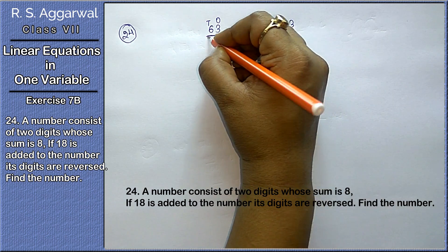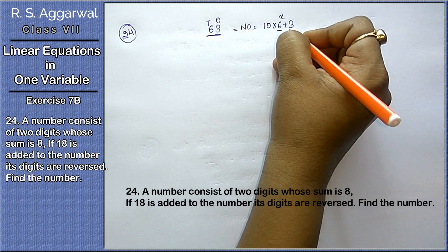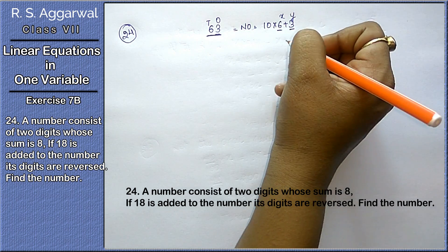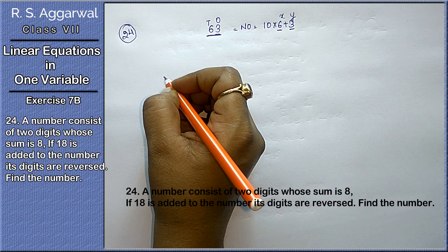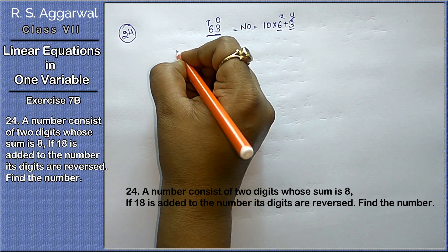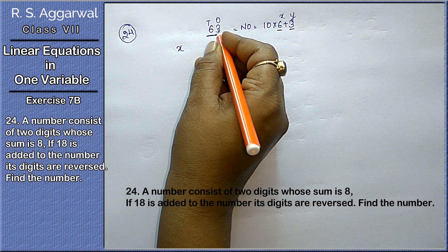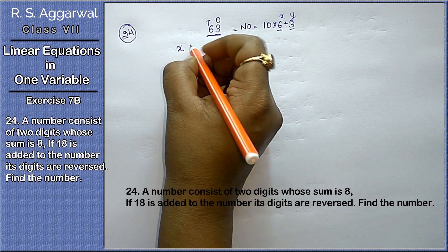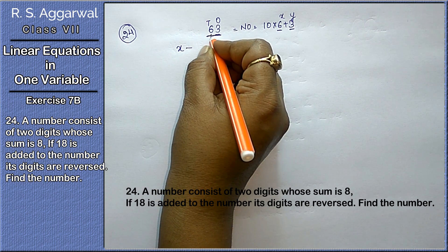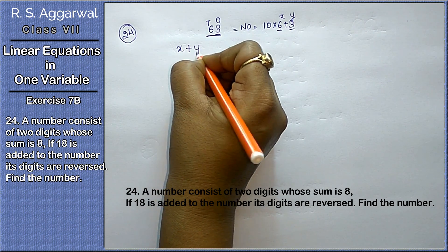If we write this in expanded form, then what will become our number? 10 into 6 plus 3, right friends. Now we will know this number. We will consider x and y. Now we will do the question. A number consists of two digits whose sum is eight. That means x plus y equals to 8.